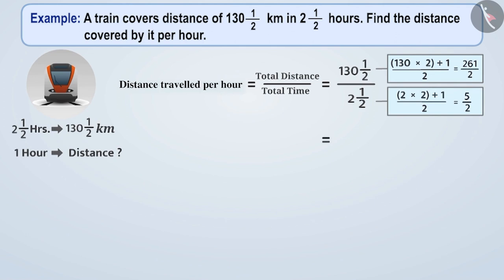So now, the division will be 261 by 2 divided by 5 by 2. Let's solve this. We will use the concept of reciprocal to divide the rational numbers. The reciprocal of a number is that which on multiplying with original number results in 1. To get the reciprocal of a number, we interchange the numerator and denominator of the number.